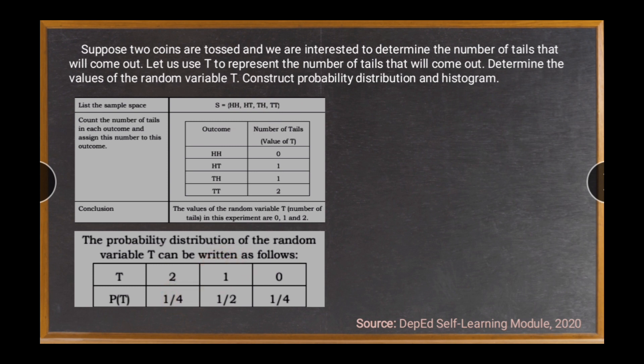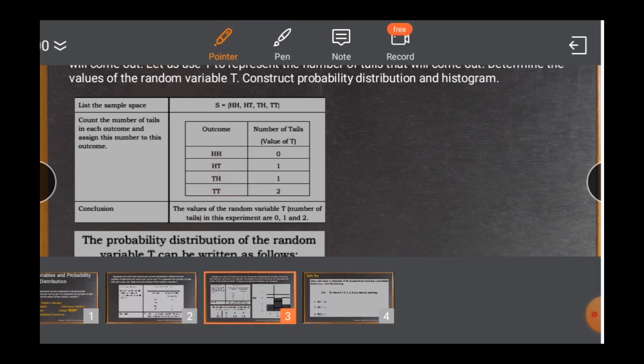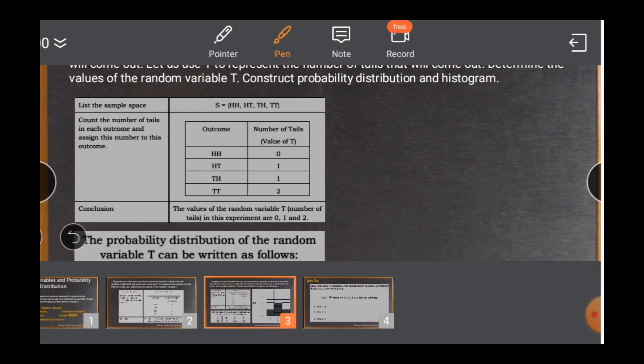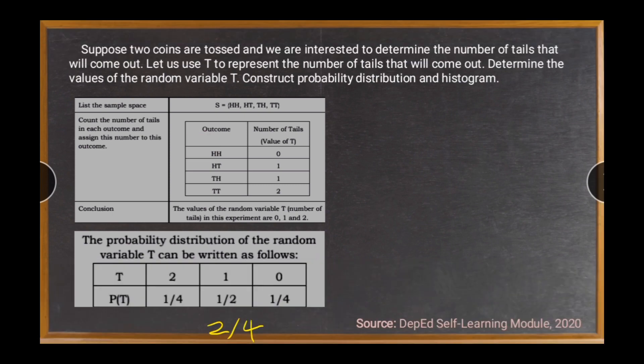And if our tail is 1, we have head-tail and tail-head. That's why we have actually 2 here, over 4. And why 1 half? Because if we are going to simplify 2 over 4, that's 1 half. And if we have no tail, that's head-head. So we have 1 over 4. And this will be our probability distribution. And from here, we can construct our histogram.